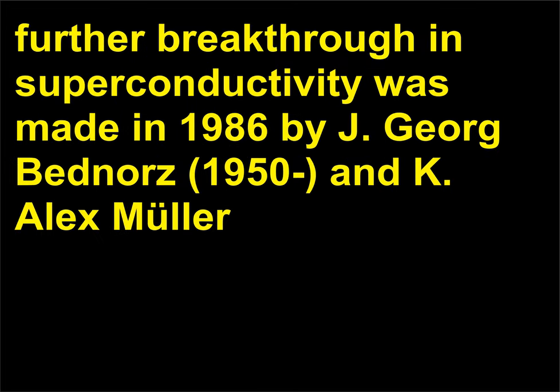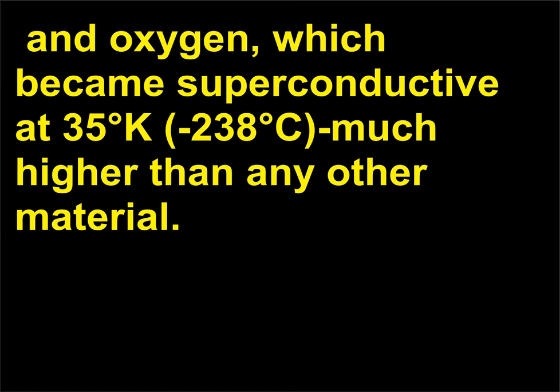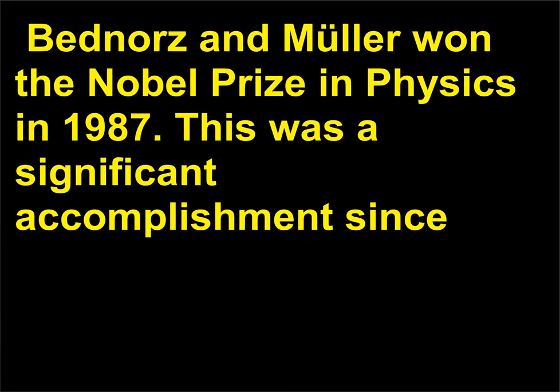A further breakthrough in superconductivity was made in 1986 by J. Georg Bednorz (1950) and K. Alex Müller (1927). Bednorz and Müller discovered a ceramic material consisting of lanthanum, barium, copper, and oxygen, which became superconductive at 35 degrees Kelvin (minus 238 degrees Celsius), much higher than any other material. Bednorz and Müller won the Nobel Prize in Physics in 1987.